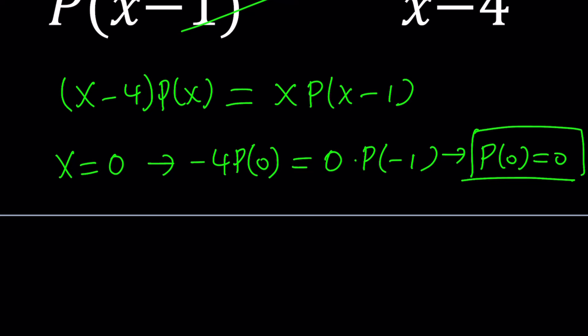Let's go ahead and save that, and now replace X with something else. What do you think is going to be our next value? X equals 1. Why? Because X equals 1 is going to work on the right-hand side. It's going to give us P of 0, which we already know, and it's going to give us something else on the left-hand side.